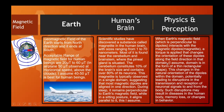This is my assumption based on physics and perception. When Earth's magnetic field interacts with the magnetic dipoles, a torque is applied that changes the orientation of these dipoles along the field direction within that single domain — which I assume is in the form of a thin rectangular shape. This change in the natural orientation of dipoles, resulting from interaction between Earth's magnetic field and the magnetite dipoles, potentially leads to disruptions in the transmission and reception of neuronal signals to and from the body. Such disruptions may result in diseases, memory loss, or changes in behavior.